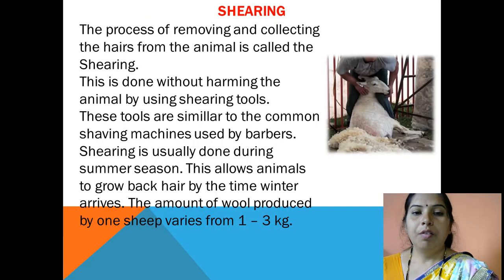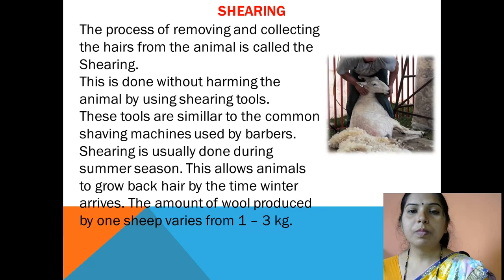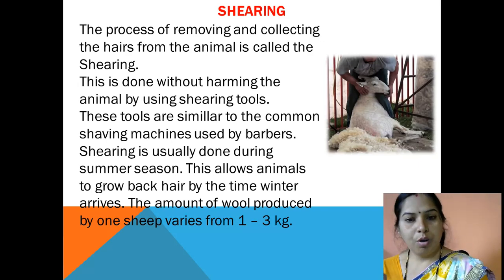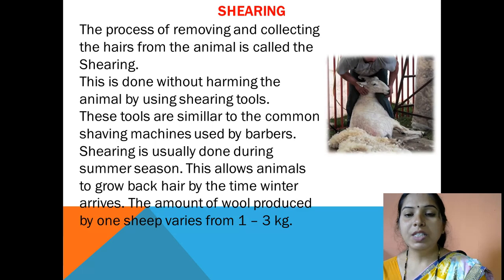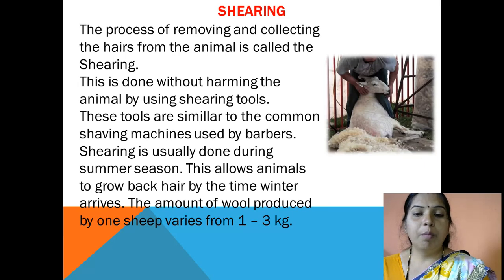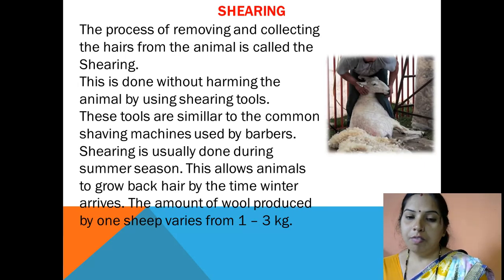The first step is shearing. The process of removing and collecting the hair from the animals is called shearing. This is done without harming the animals, using shearing tools similar to the common shaving machines used by barbers. Shearing is usually done during the summer season, so the animals can grow back their hair by the time winter arrives. The amount of wool produced by one sheep varies from 1 to 3 kg.